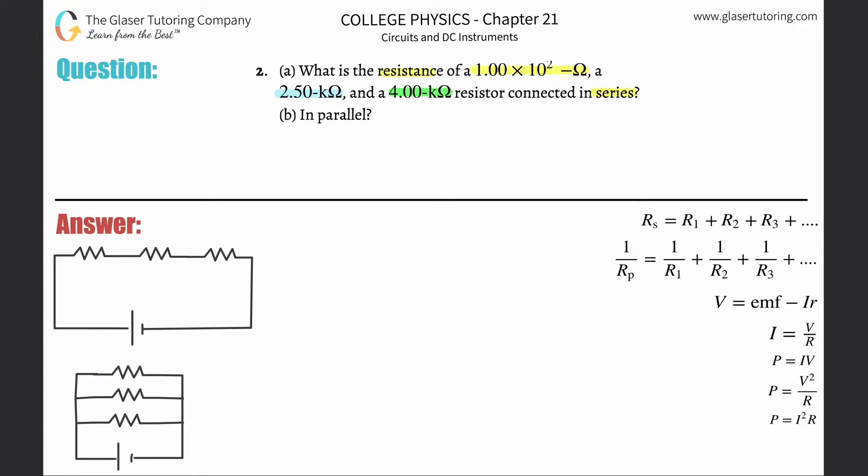I'm going to highlight the same colors. Here's the 1×10² ohm resistor, here is the 2.5 kilo-ohm, here's the 4 kilo-ohm. In the bottom picture in parallel, there's one of them, there's the next one, and the one after that is here.